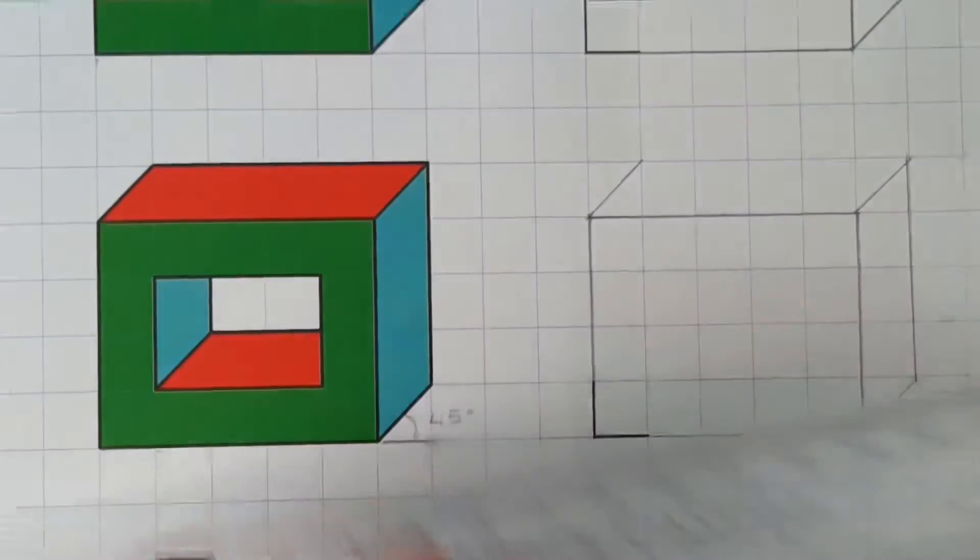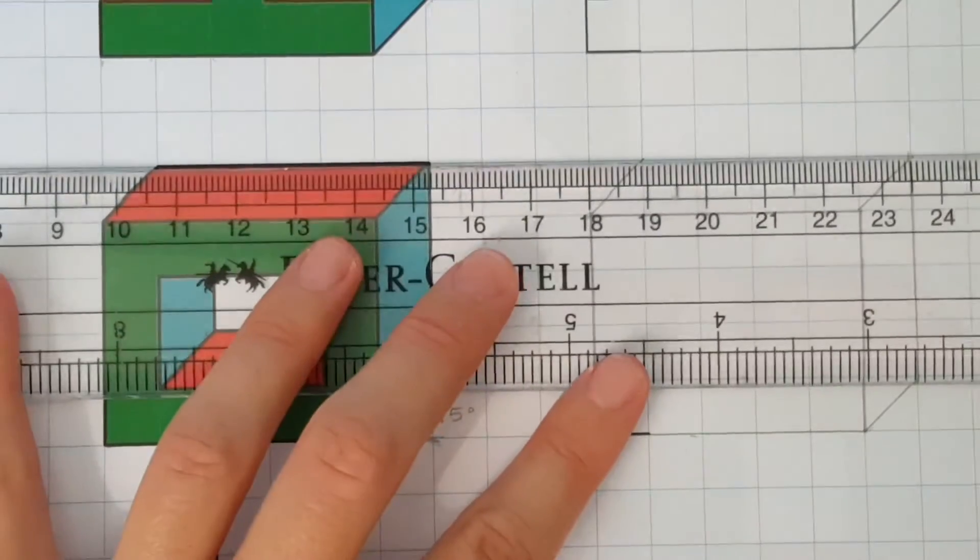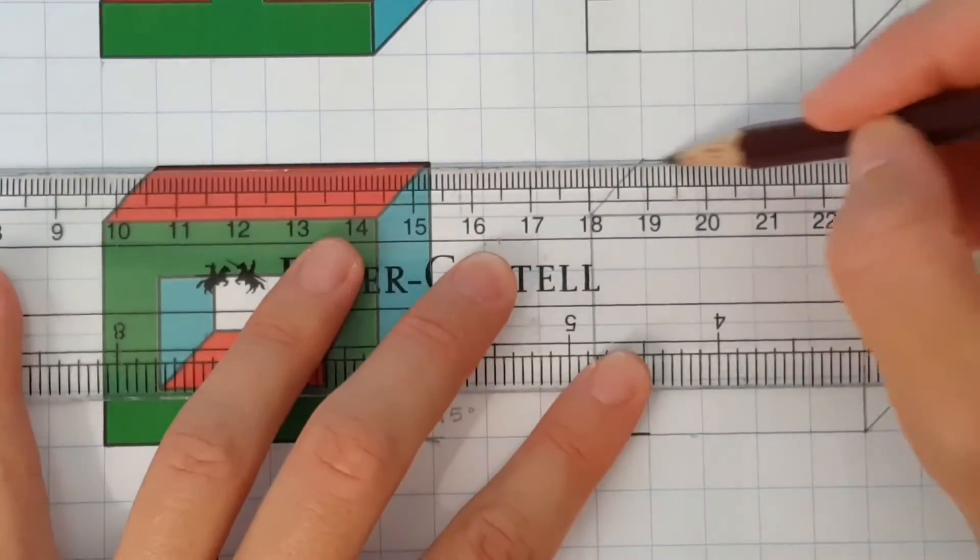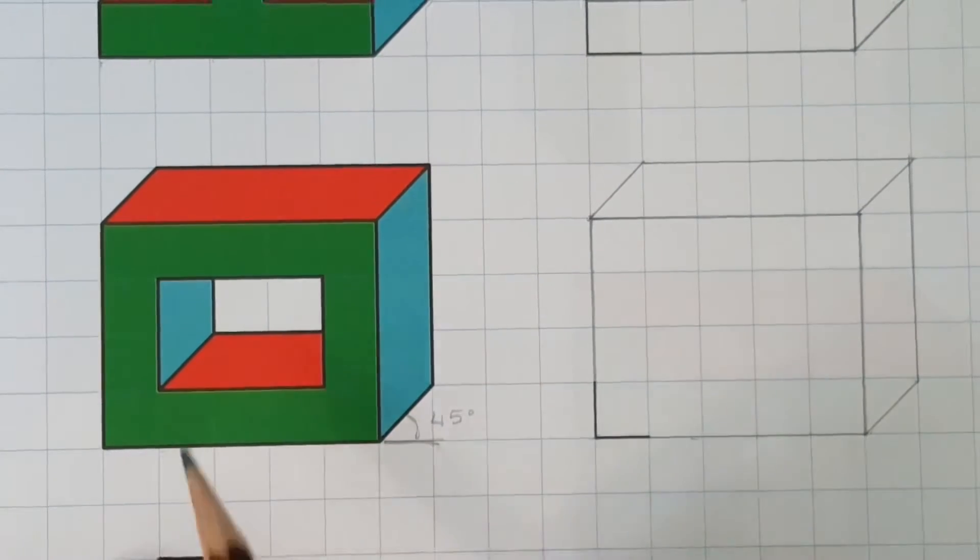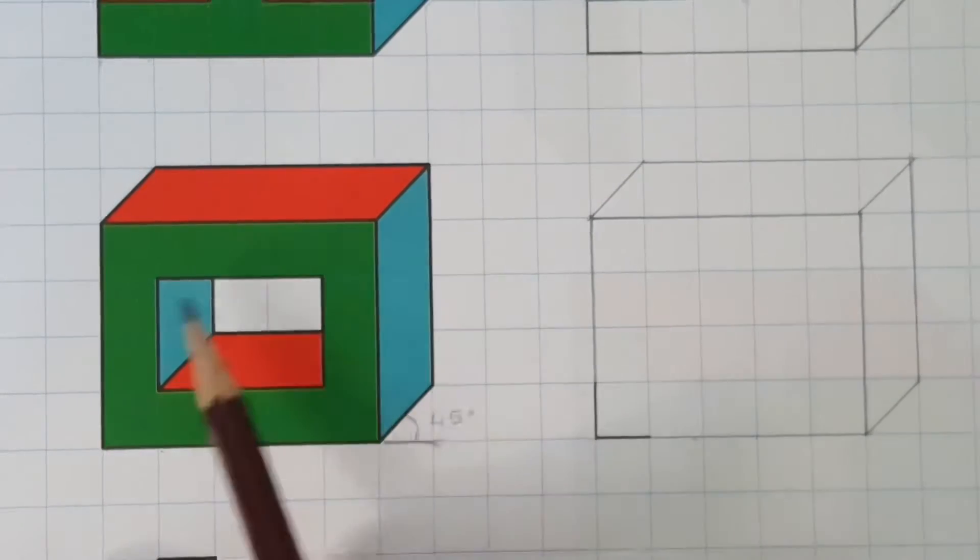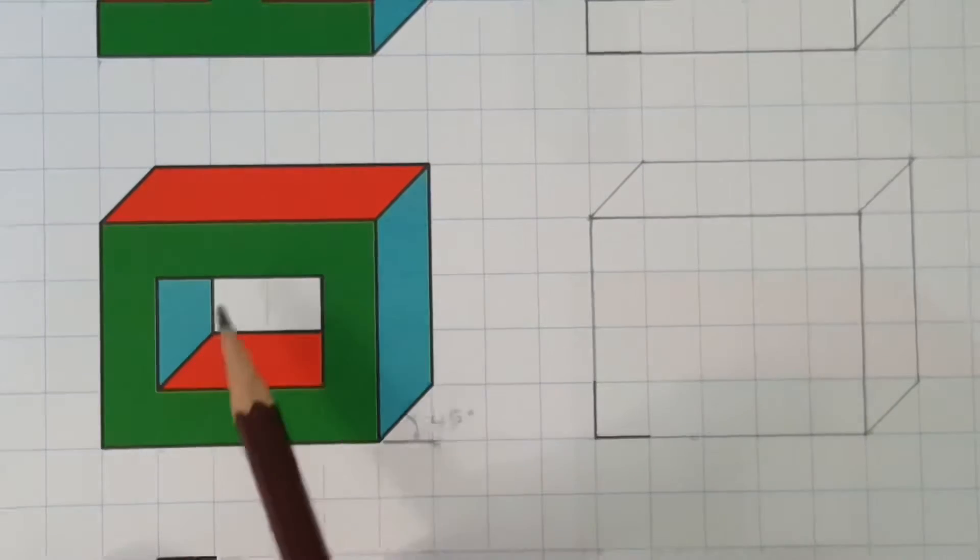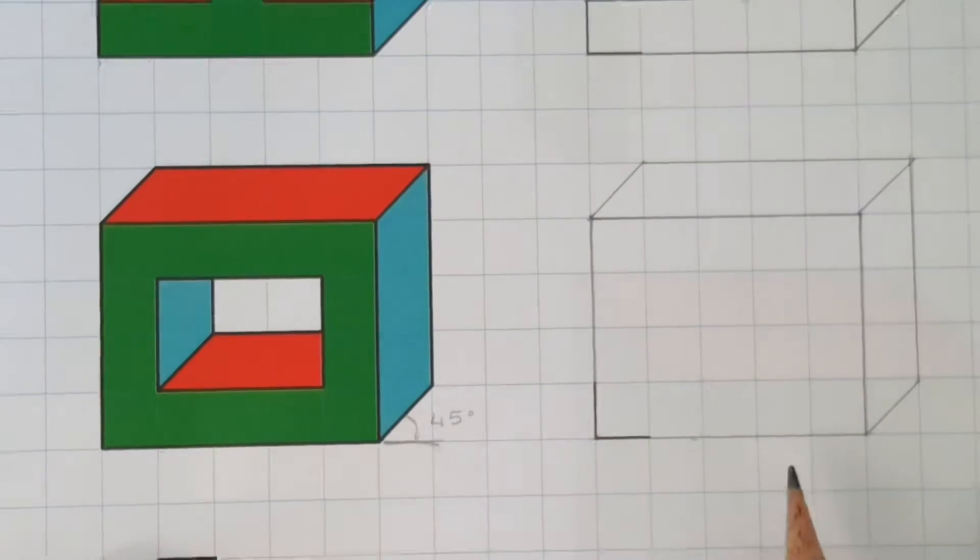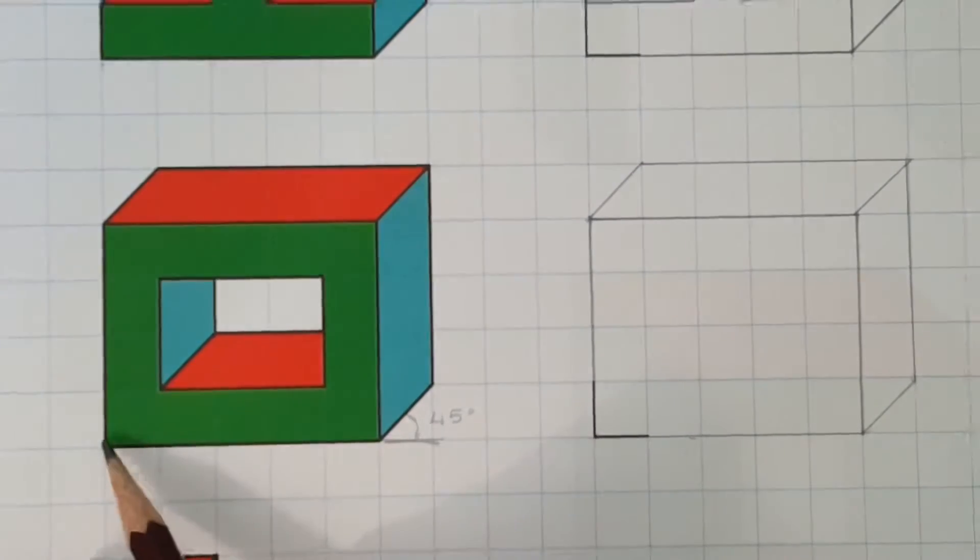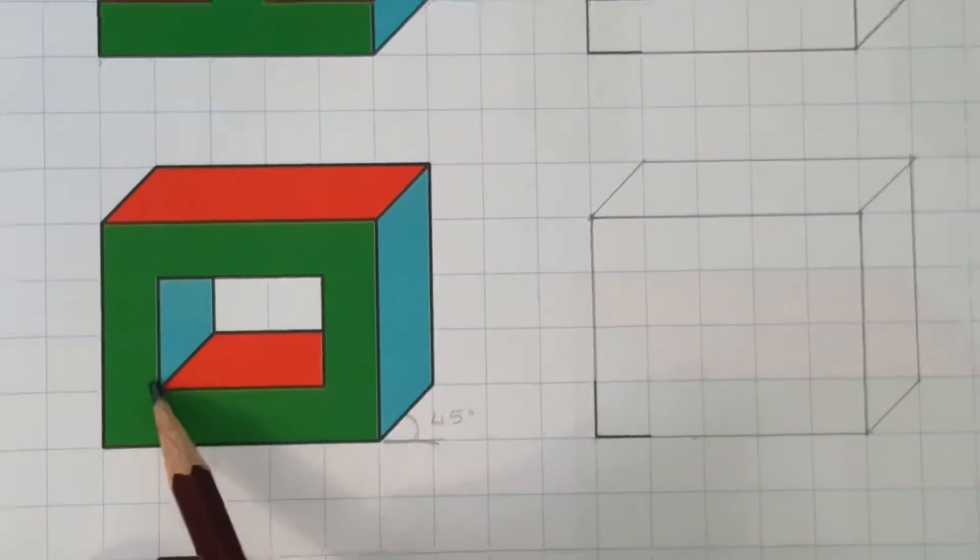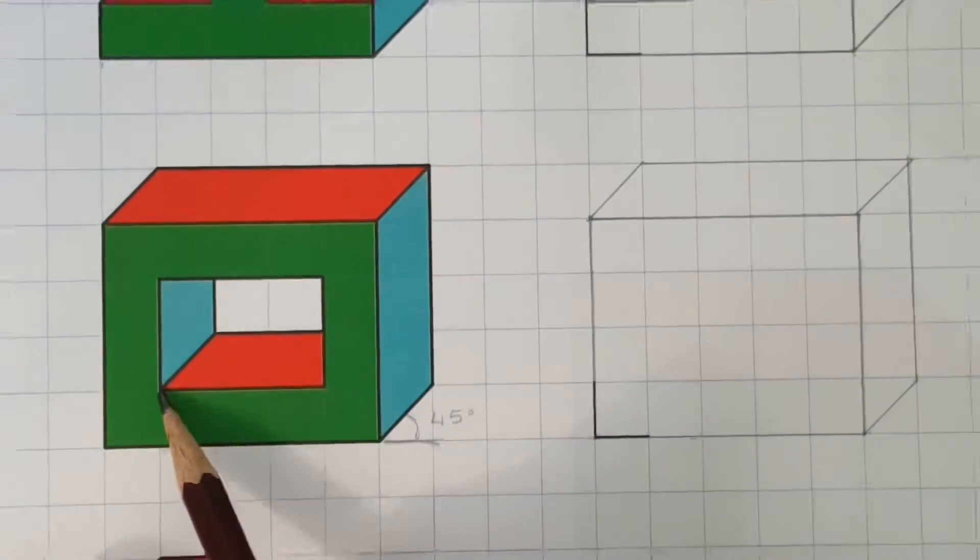Now that the outer part is finished, let's start to draw the hollow section of this rectangular shape. So to draw this rectangular hole, first we're going to draw the front rectangle. Now this rectangle, let's start by locating where this corner is.